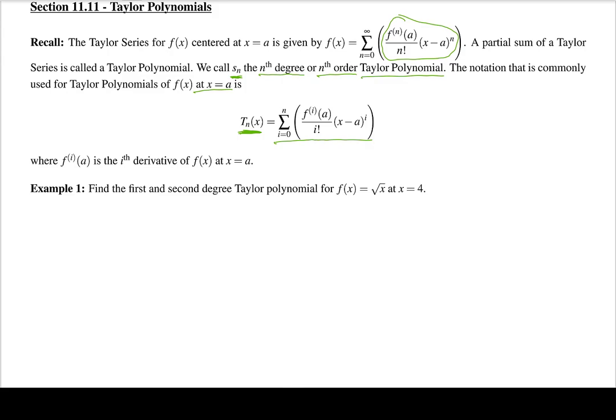Let's take Example 1: find the first and second degree Taylor polynomial for f(x) = √x at x = 4. For the first degree Taylor polynomial, T sub 1 of x, our formula says this is the sum from i equals 0 to n=1 of f^(i)(a) over i factorial times (x − a)^i.